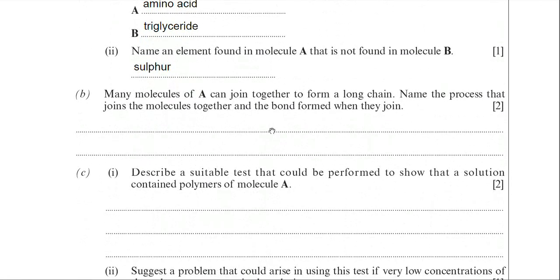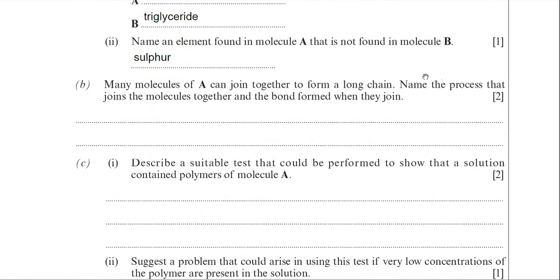Moving on to part B then. Many molecules of A can join together to form a long chain. Name the process that joins the molecules together and the bond formed when they join. Now, if you couldn't identify what molecule A is, you're likely to have lost another two marks for this part B.